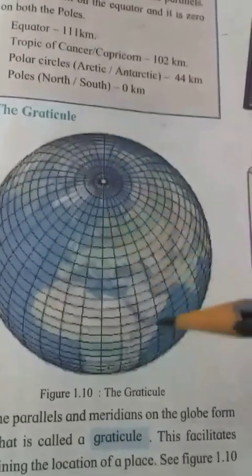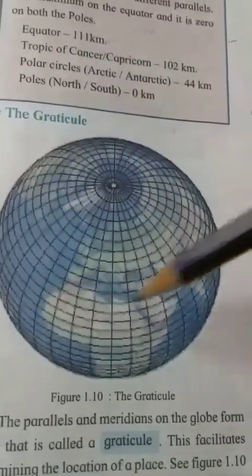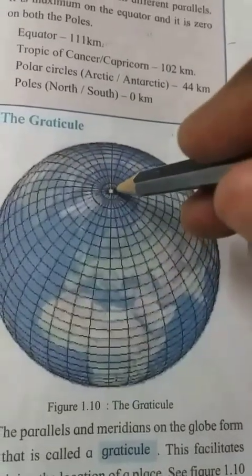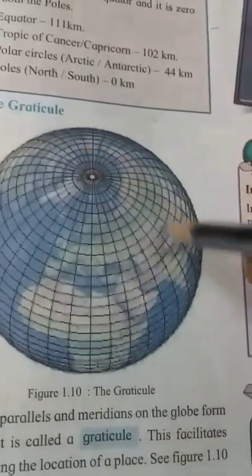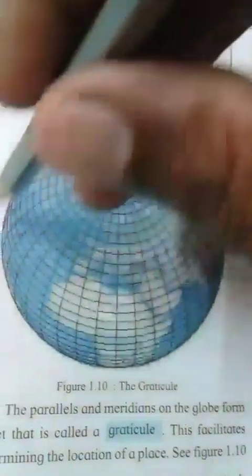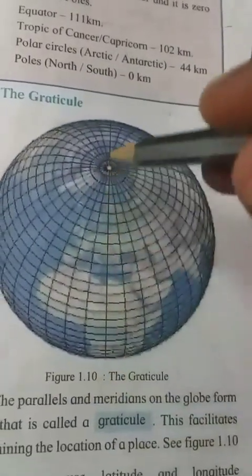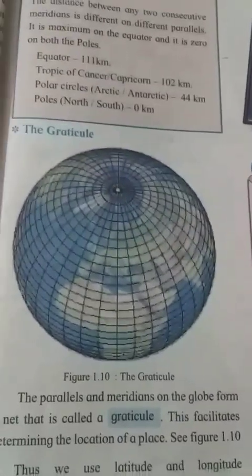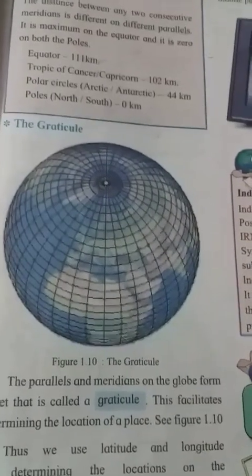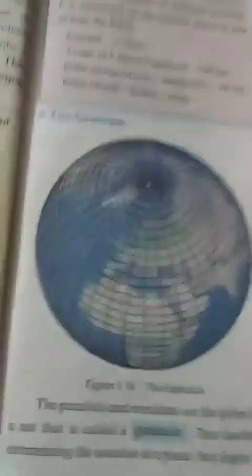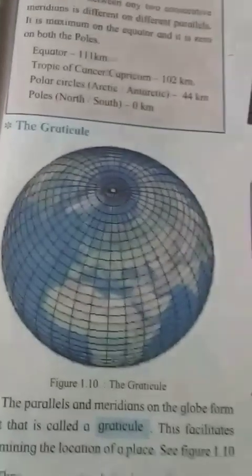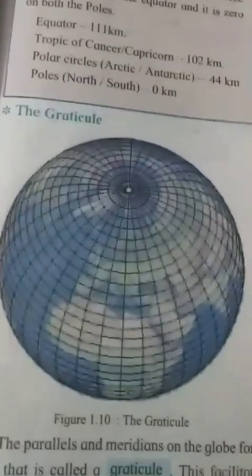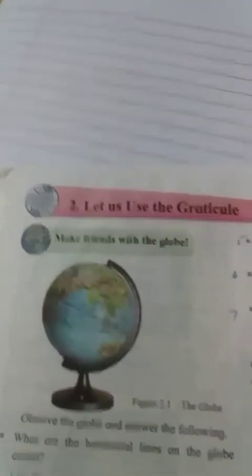Parallels of latitude appear as circles on a globe and meridians of longitude appear as semicircles on a globe. Together, these parallels of latitude and meridians of longitude form a net on the globe called the graticule. The main use of the graticule is that it facilitates determining the location of a place on the Earth's surface.